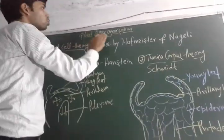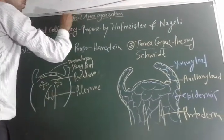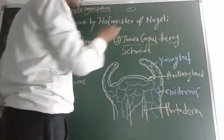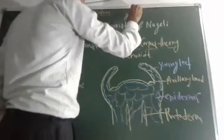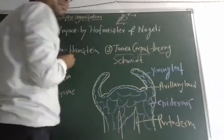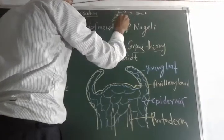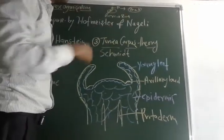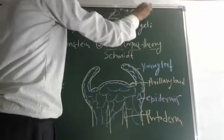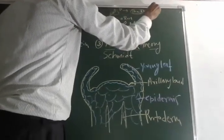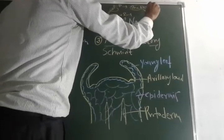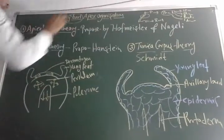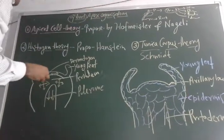Today I am going to represent the topic: shoot apex organization. First of all, what is a shoot? You can simply say the seed is the primordial cell, and after division it forms a plumule and a radicle. The plumule forms the shoot region and the radicle forms the root region. The shoot is the exposed part of the plant — stem, flowers, leaves, etc.